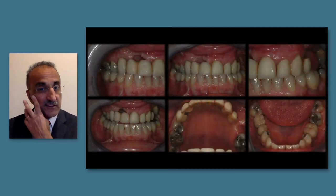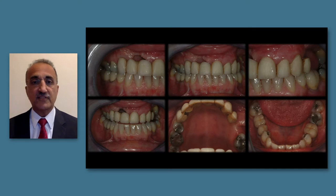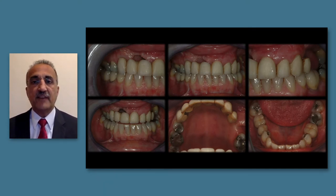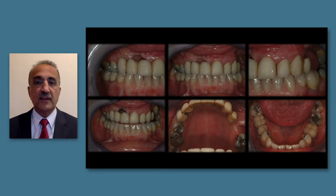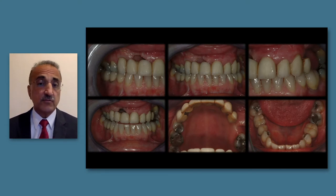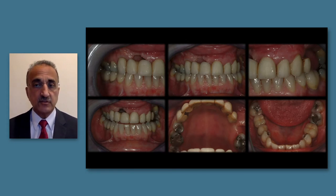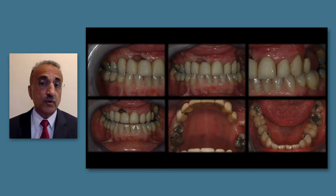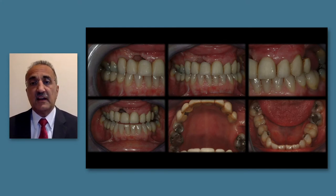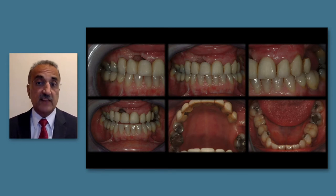I saw the patient for the first time after being referred with a very significant defect and very compromised soft tissue and ridge area in the anterior maxilla. The patient wants individual teeth, a solution for this situation, and would prefer to avoid prosthetic gingiva - she wants her gum and bone rebuilt. This presents a great challenge.